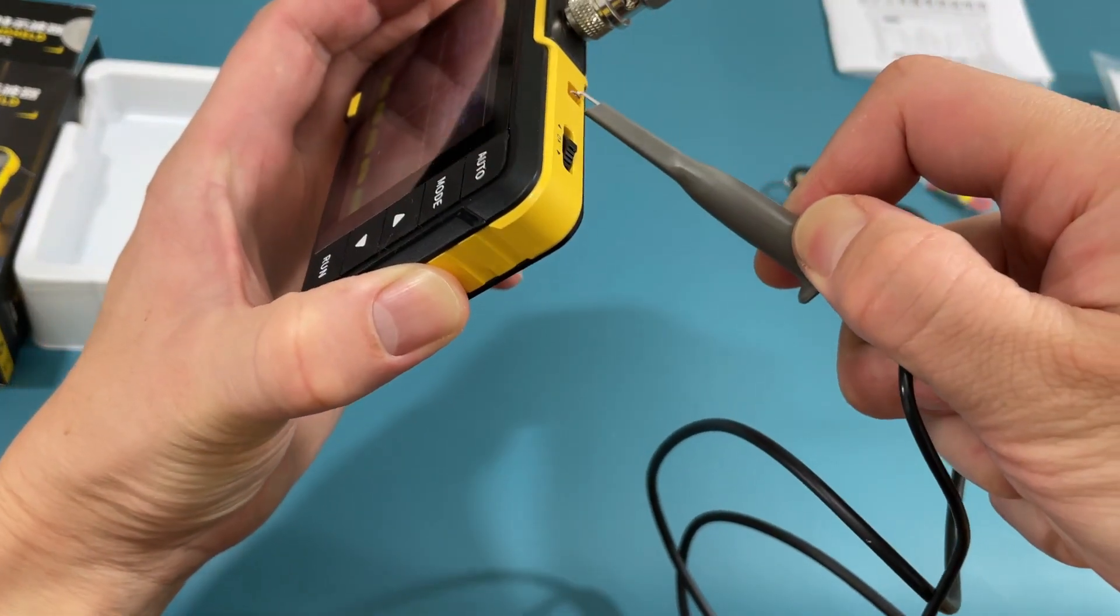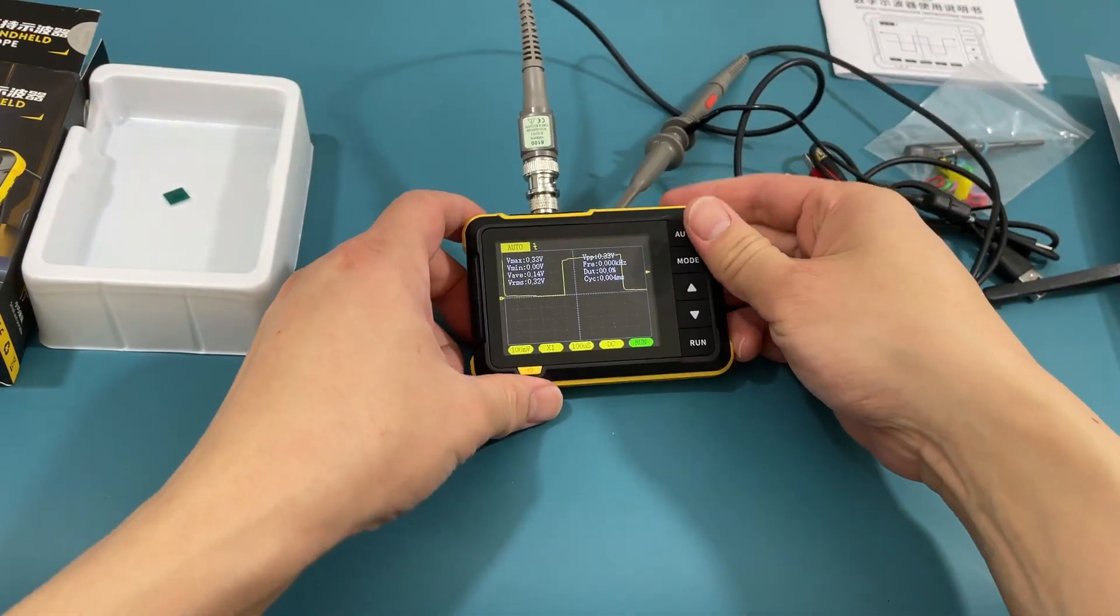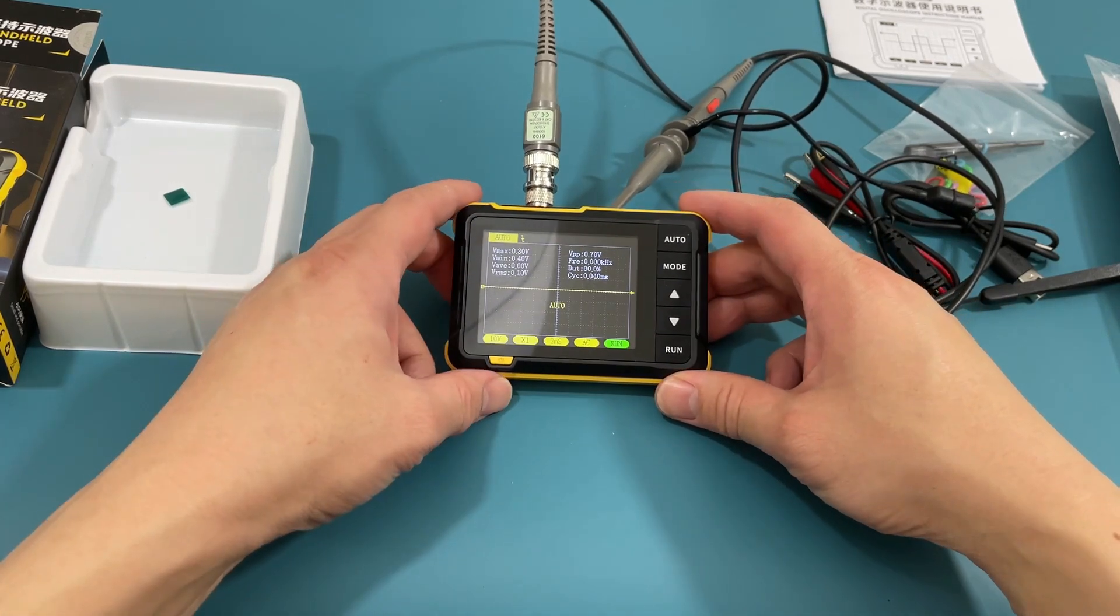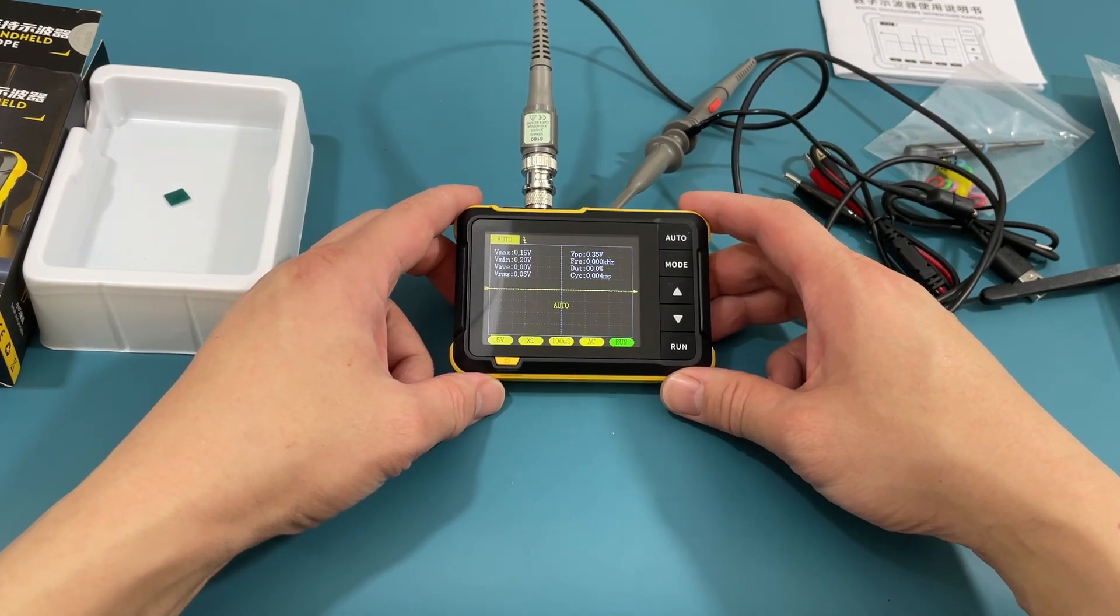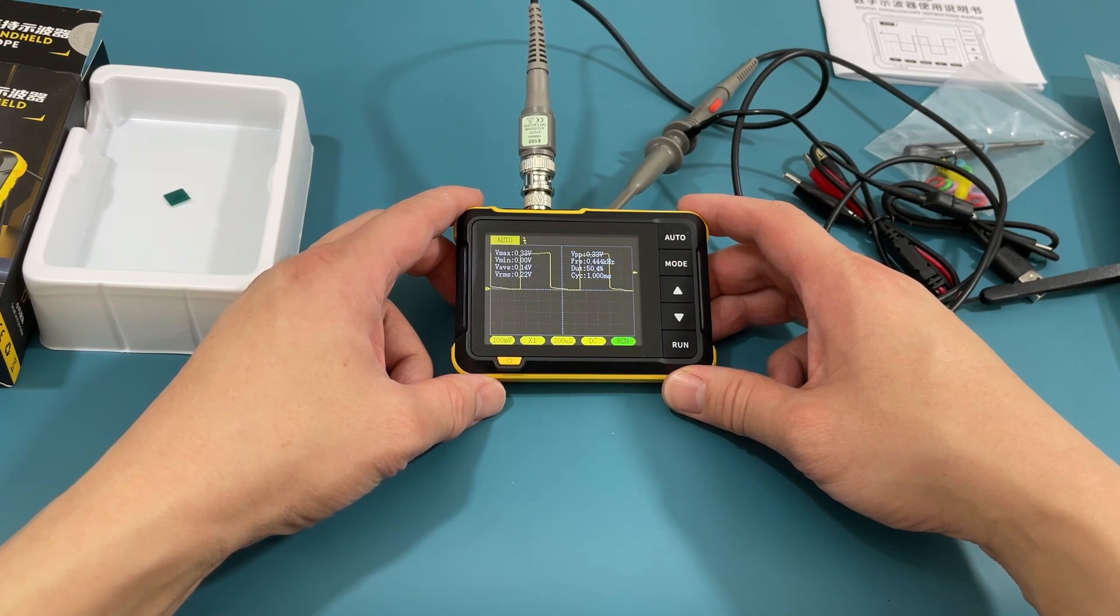Let's calibrate it by attaching the probe to the top area of the oscilloscope. Press the auto button to start the calibration. Works perfect.